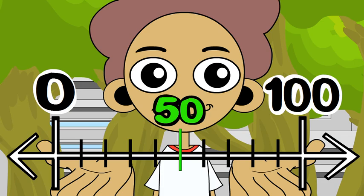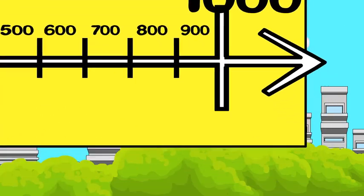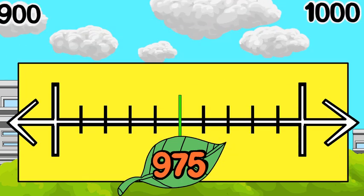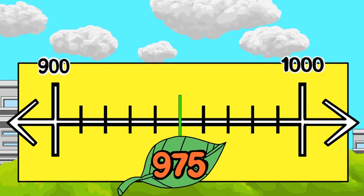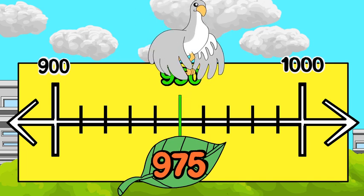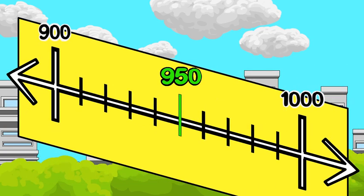And sometimes the nearest hundred is one thousand. Look at 975. The benchmarks are 900 and 1,000. The midpoint is 950. 975 is greater than 950, so to the nearest hundred, 975 rounds up to 1,000.